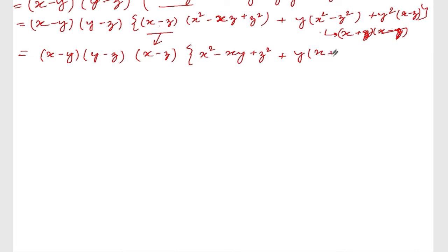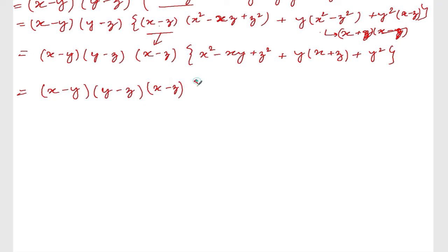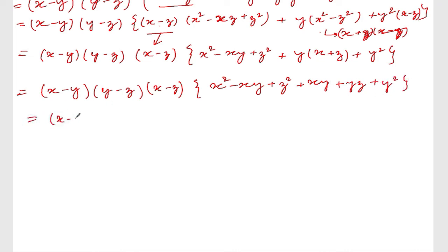Now: (x minus y)(y minus z)(x minus z) taken out common. What's left inside: x square minus xz plus z square, plus y(x plus z), plus y square. Simplifying: x square plus y square plus z square plus xy plus yz. But (x minus z) can be written as minus(z minus x), so putting the minus factor in: (x minus y)(y minus z)(z minus x) times the bracket.